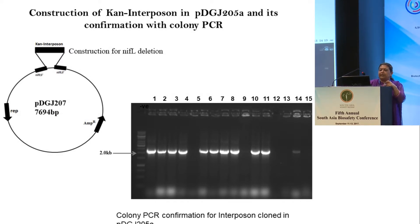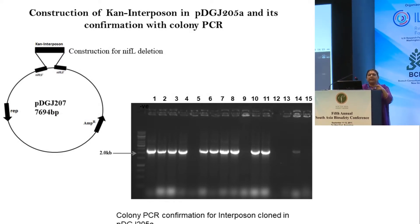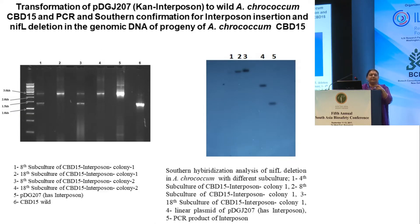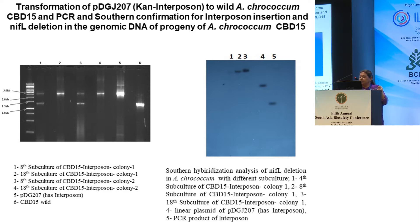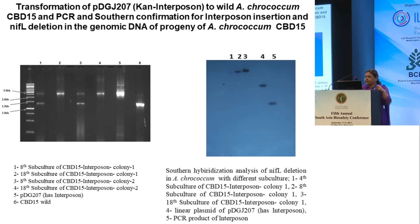To this construct we added a kanamycin interposon, which helps in tracking where our plasmid has gone. Using this, we did transformation of Azotobacter chroococcum. Since Azotobacter chroococcum has 20 chromosomes, homologous recombination takes place, and 18 to 20 subcultures are needed over eight days to ensure the construct goes to all chromosomes. You can see a single band at the 18th subculture — previous subcultures show more bands. Once confirmed that it has gone to all chromosomes, it was verified by Southern hybridization.